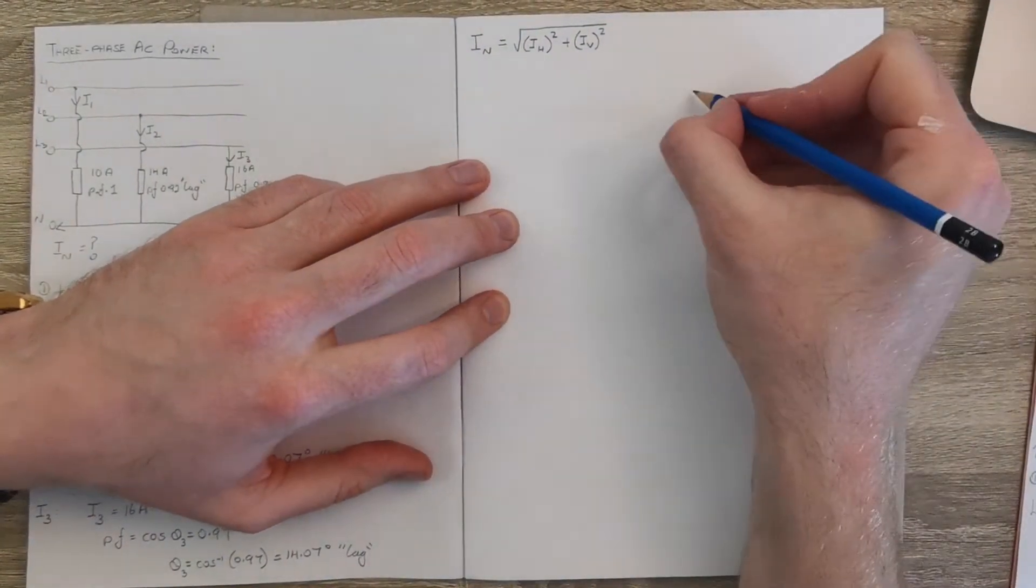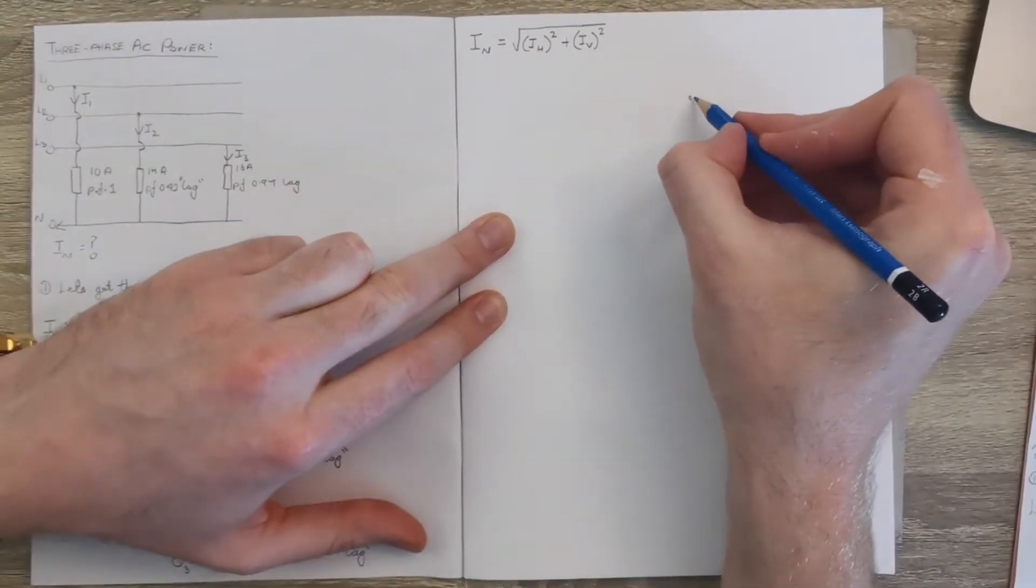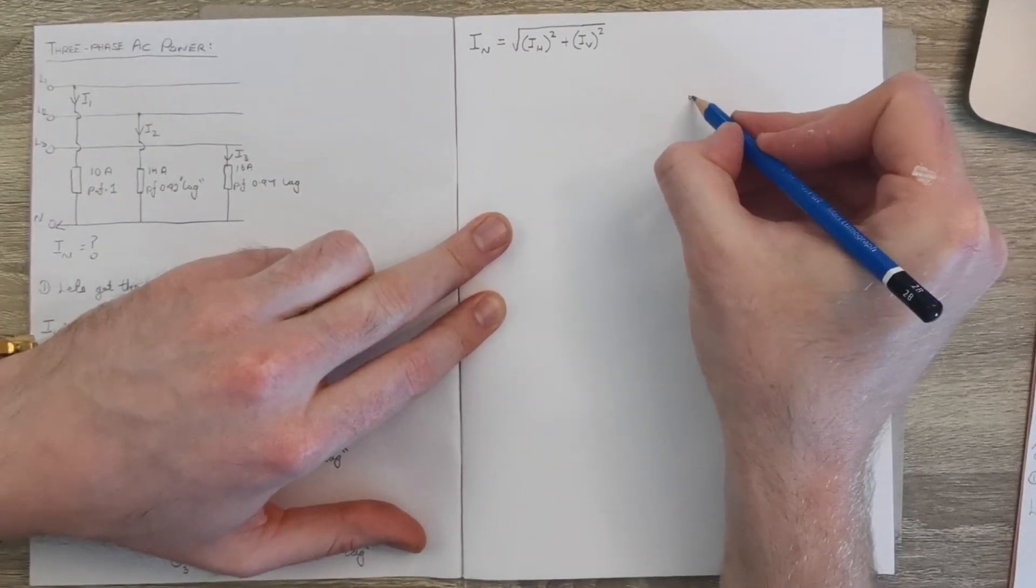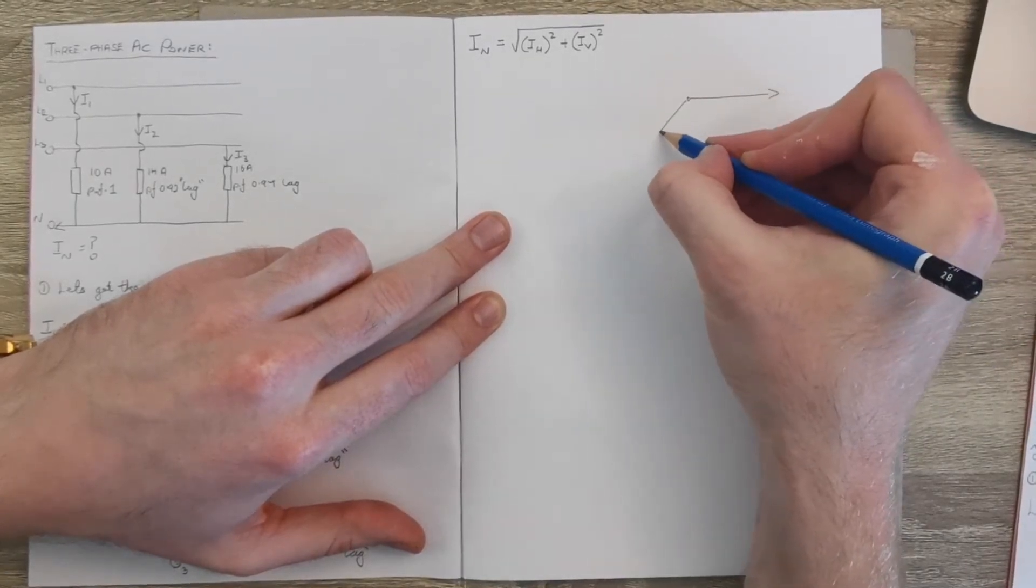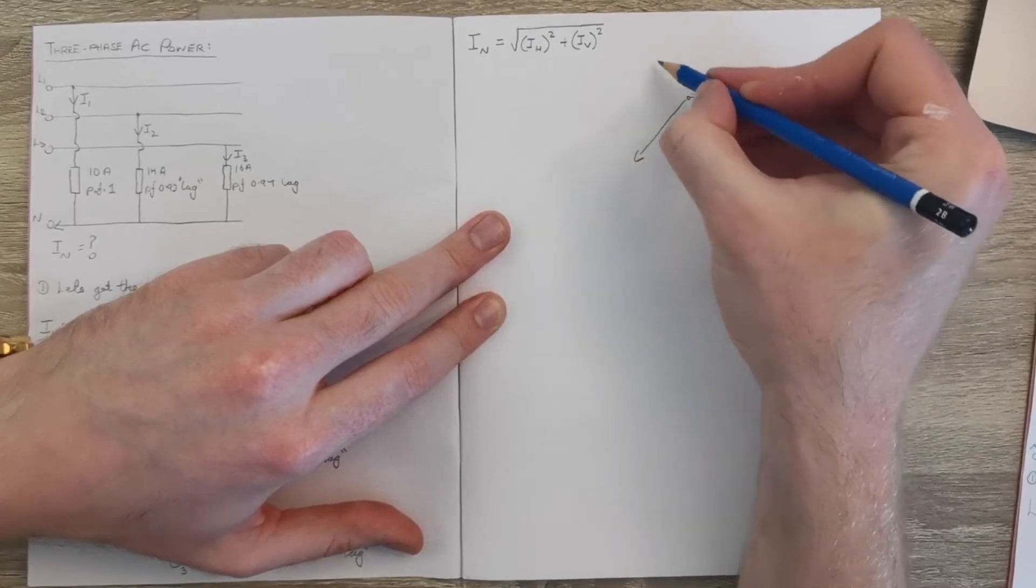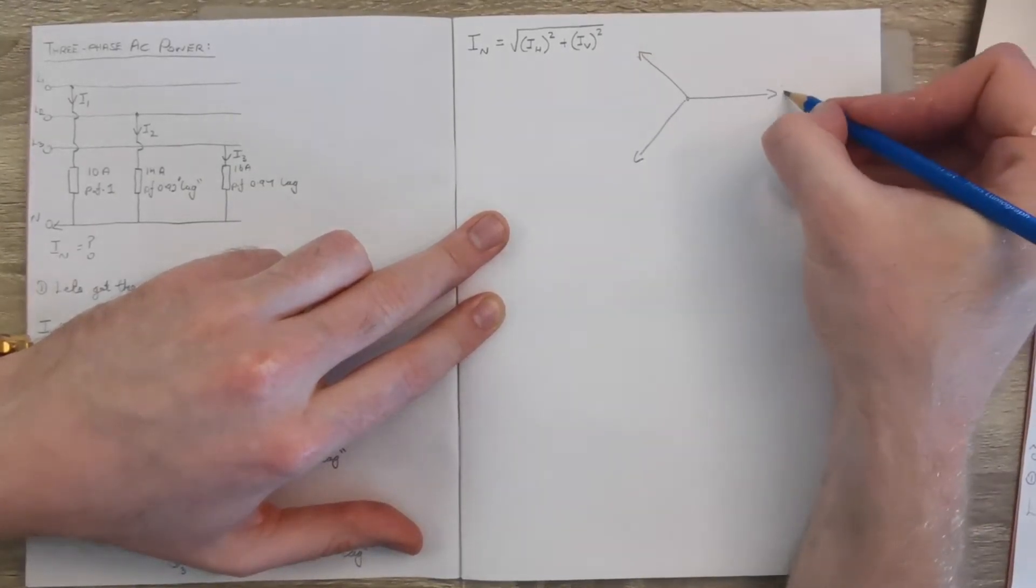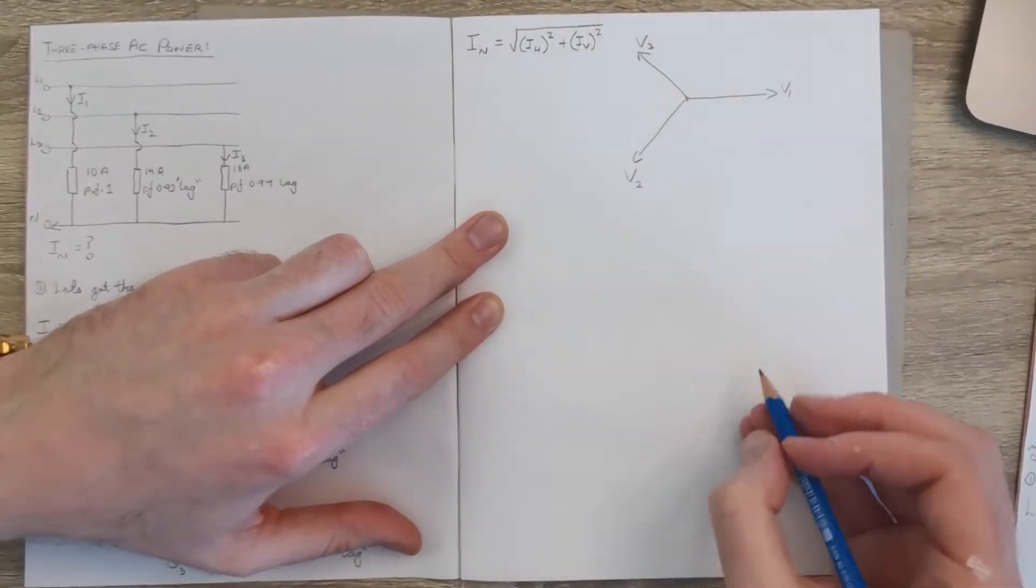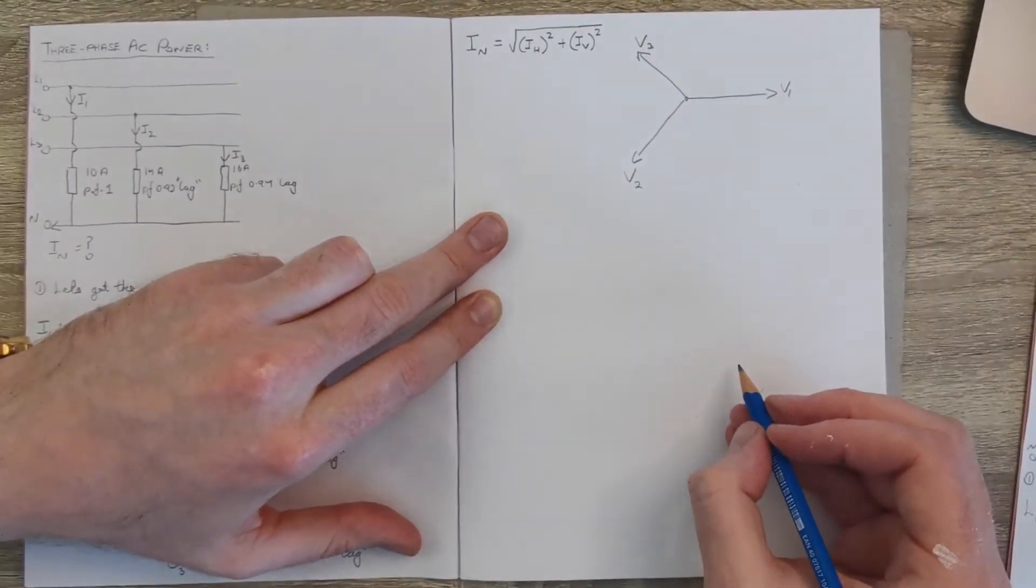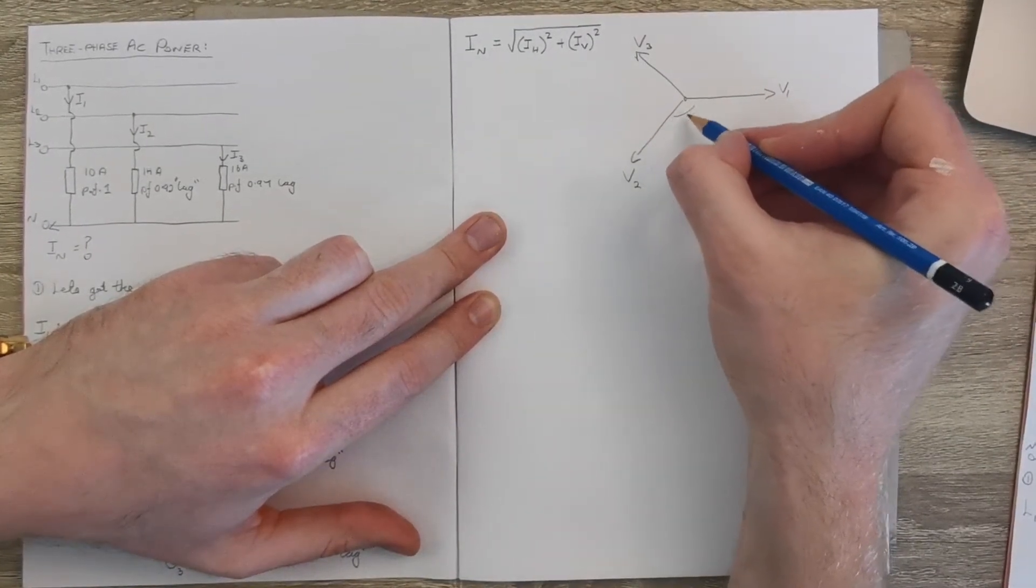Before we get this we need to work out what IH and IV are and where they come from. So just to do a quick sketch or a phasor diagram of our voltages and our currents. It's a balanced three-phase system in terms of the voltages, so we've got V1, V2, and V3, and each of these are separated by 120 degrees.